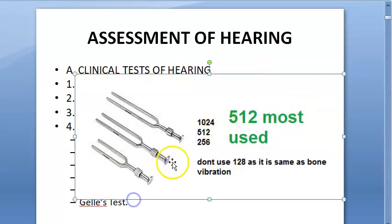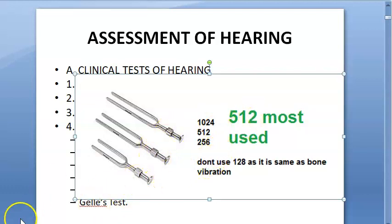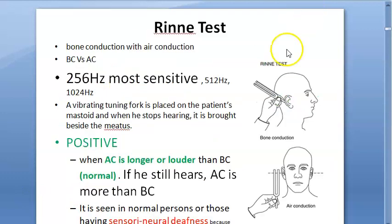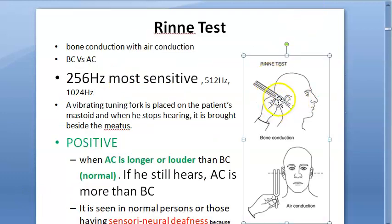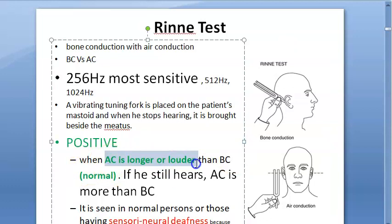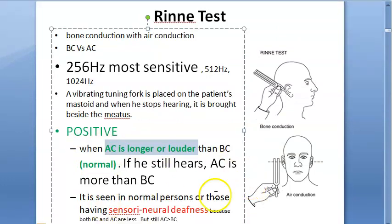The tuning forks come in 256, 512, and 1024 Hz frequency — 512 Hz is the most used. For Rinne's test, you first strike the tuning fork and keep it on the mastoid process. When the patient stops hearing via bone conduction, you bring it near the external auditory canal. If they can continue to hear, this is normal and positive — air conduction is longer than bone conduction.